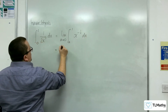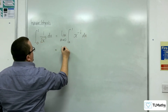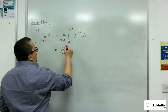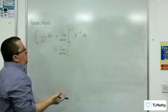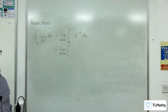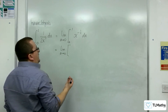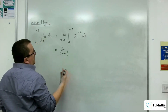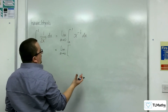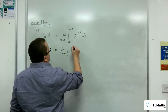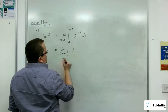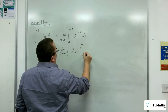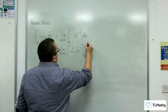This is equal to the limit as a tends to 0 of... add 1 to the power, divided by the new power. Adding 1 to the power gives one half, dividing by one half is the same as multiplying by 2. So we get 2x to the half, which is 2 root x, evaluated between a and 1.